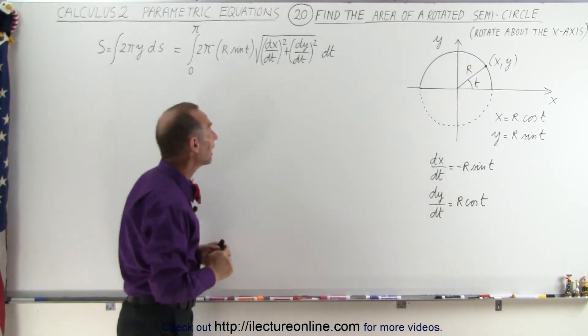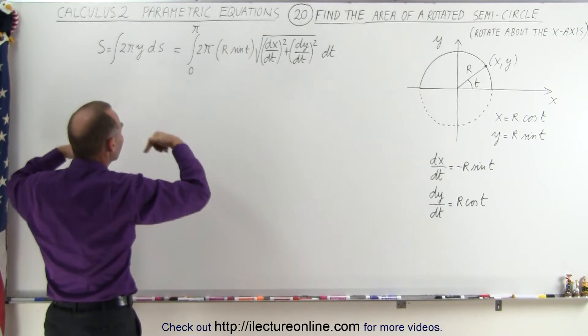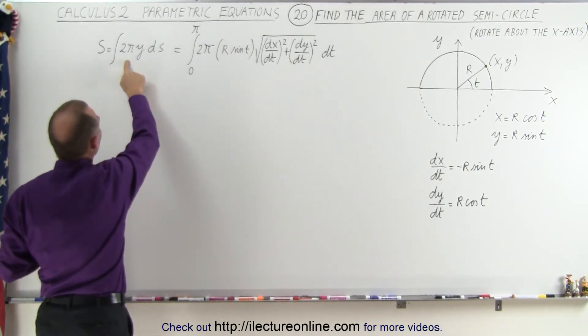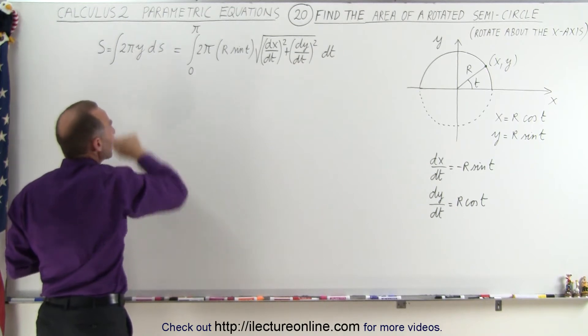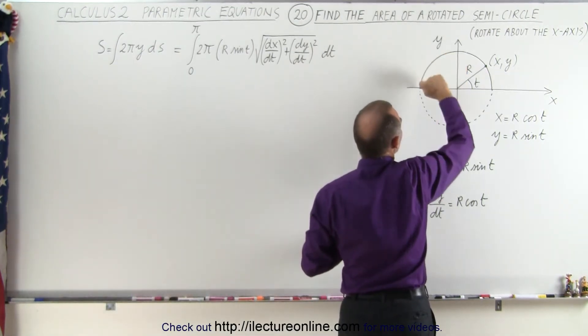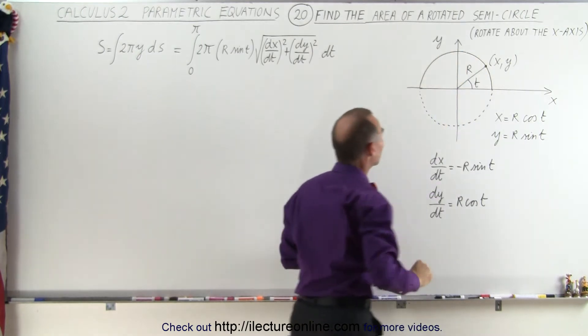Now the reason why we need that is to find the surface area of a rotated arc length, in this case a semicircle, that's equal to 2πy times ds. Of course y is the distance from the x-axis to a point on the curve and ds would be a small arc length along that curve.